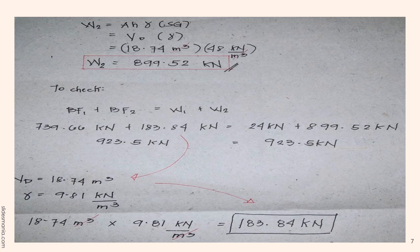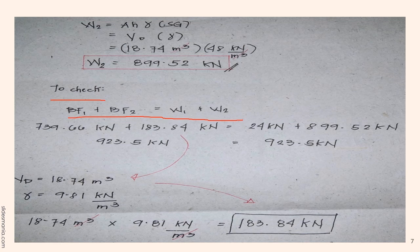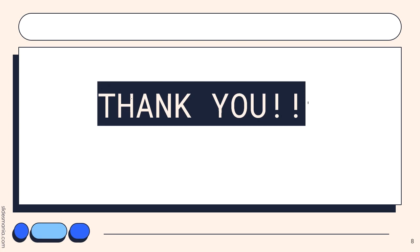Finally, we can find the weight of the anchor using: weight = volume displaced × specific weight = 18.74 m³ × 48 kN/m³ = 899.52 kilonewtons. To verify, we plug all values back into BF₁ + BF₂ = W₁ + W₂ and confirm both sides are equal. That concludes our Chapter 3 topic on buoyancy. Thank you for listening.